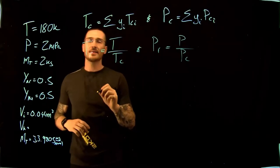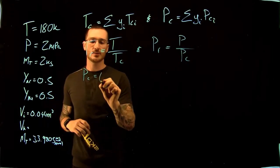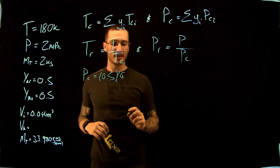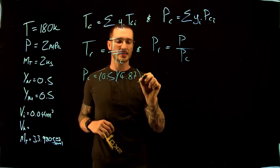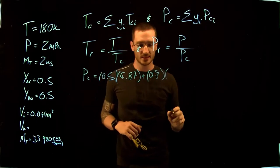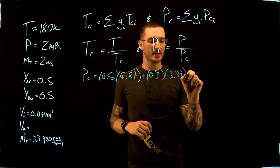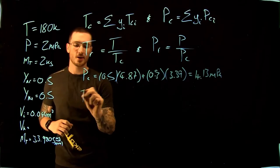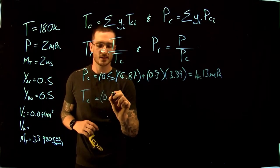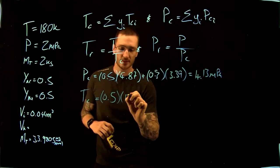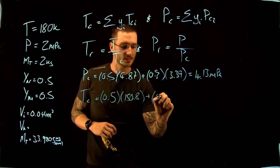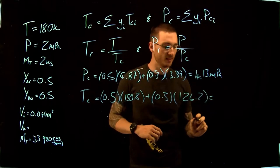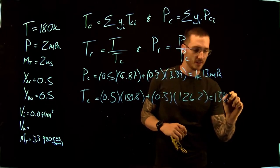The pseudo critical pressure equals 0.5 times the critical pressure of each component from tables: 0.5 × 4.87 MPa plus 0.5 × 3.39 MPa, giving us 4.13 MPa. We also find our pseudo critical temperature using the same tables: 0.5 × 150.8 plus 0.5 × 126.2, giving us 138.5 Kelvin.